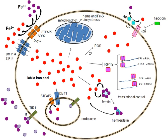Heme groups are part of hemoglobin, a protein found in red blood cells that serves to transport oxygen from the lungs to the tissues. Heme groups are also present in myoglobin to store and diffuse oxygen in muscle cells.